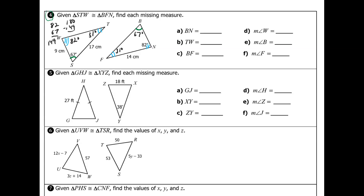Now let's look at the sides. From the congruence statement, segment ST is congruent to segment BF — both get one mark — so since ST is 17 centimeters, BF is also 17 centimeters. Next, TW is congruent to FN — both get two marks — so FN is also 14 centimeters.